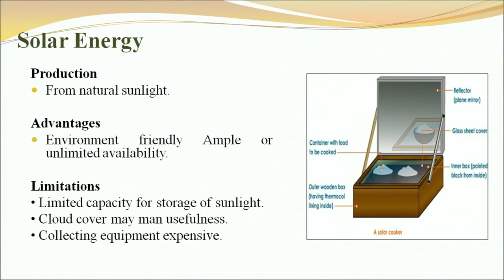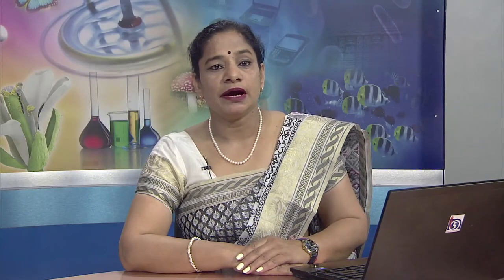Next is solar energy, produced from natural sunlight. Advantage is that it is environment-friendly with ample or unlimited availability. Limitations are limited capacity for storage of sunlight, reduced usefulness due to cloud cover, and expensive collecting equipment. Next is wind energy, produced by windmills used since long for irrigation and crops. Advantage is no pollution and available for free. Limitations are that it is not suitable everywhere or is intermittently available, and fans of windmills are visible hazards for flying birds and aeroplanes.